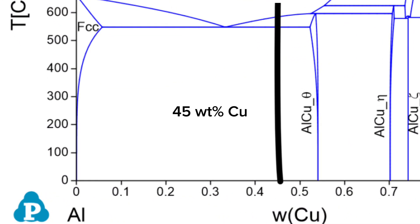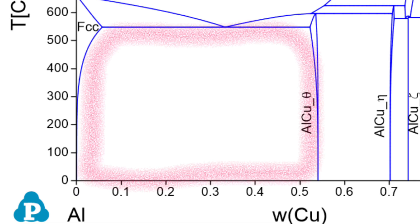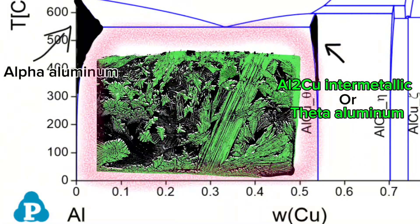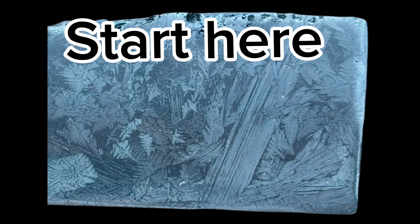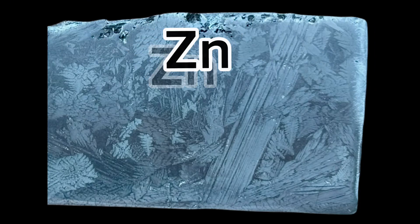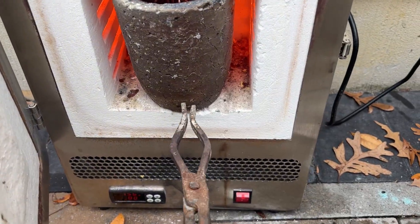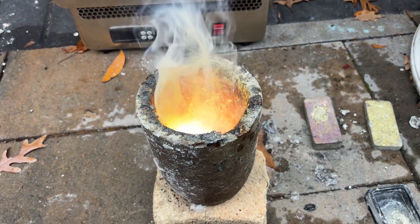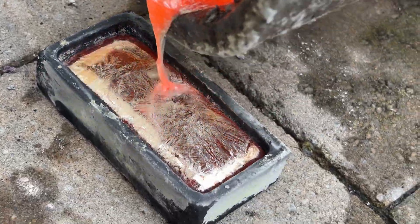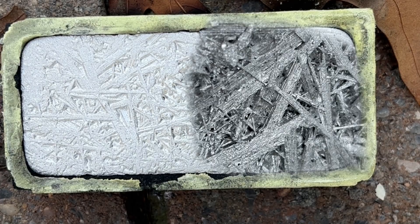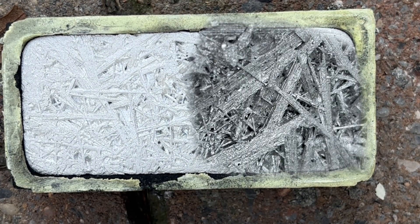We know that in a slow-cooled alloy of 45 weight percent copper and 55 weight percent aluminum, we exist in the coexistence region of the Al2Cu intermetallic — or theta aluminum — and alpha aluminum, which achieves a microstructure with large intermetallic crystals laid on top of an alpha-theta aluminum eutectic. I wanted to start here and then explore the effects on this microstructure from the addition of zinc, where I expect the morphology of the intermetallic crystals to significantly change. So I melted my measured amount of copper and aluminum, added one standard splash of zinc, then poured the ingot and observed how the intermetallic crystals grew upon solidification — they were quite different from the pure 45-55 alloy.